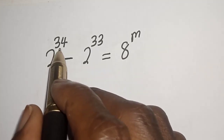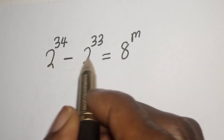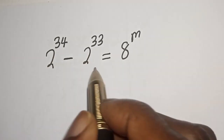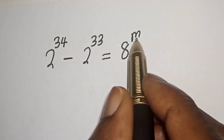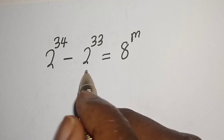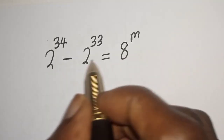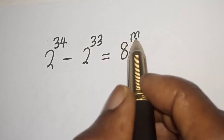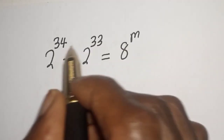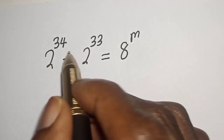2 raised to power 34 minus 2 raised to power 33 is equal to 8 raised to power m. Hi everyone, welcome to my class. In this class, I want to find the value of m from this nice equation.